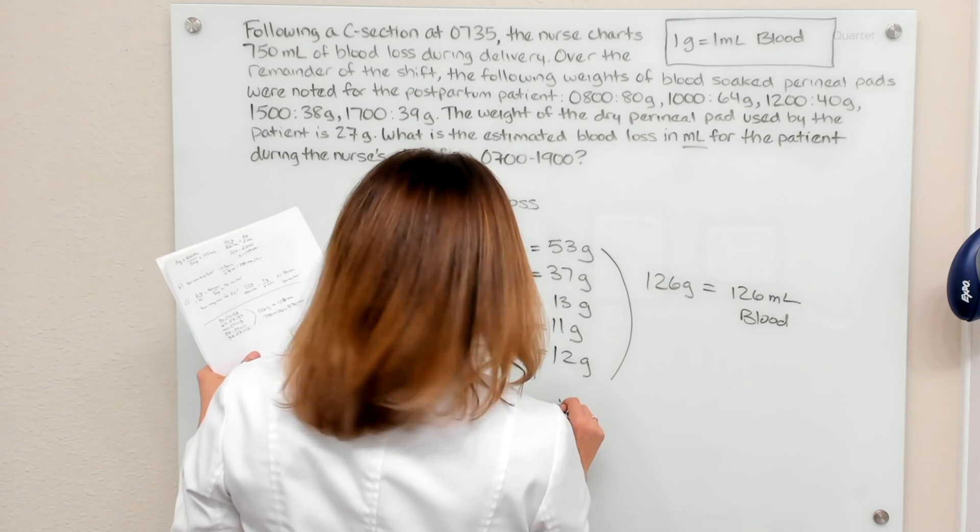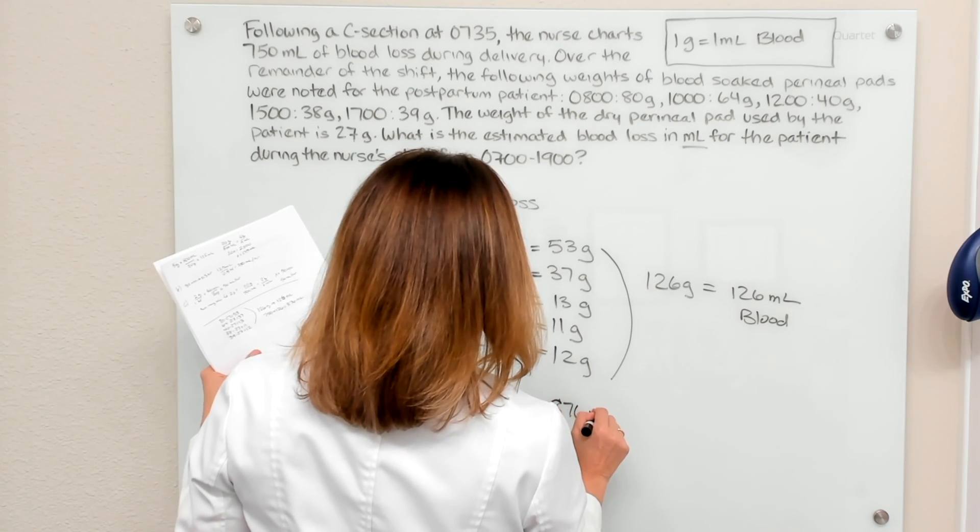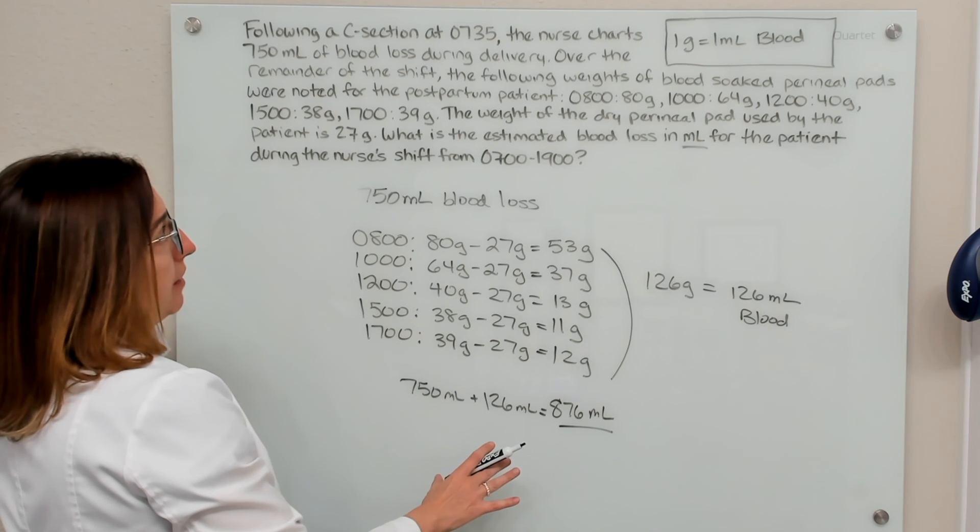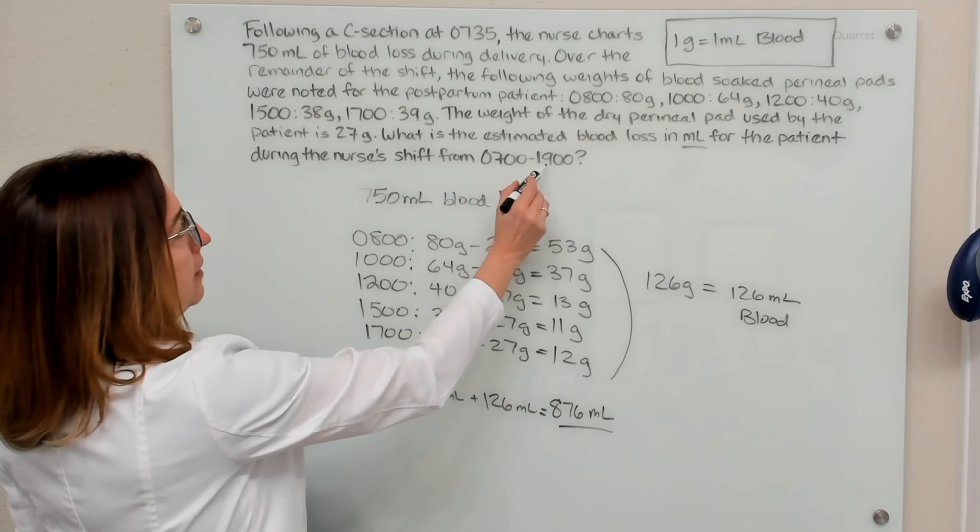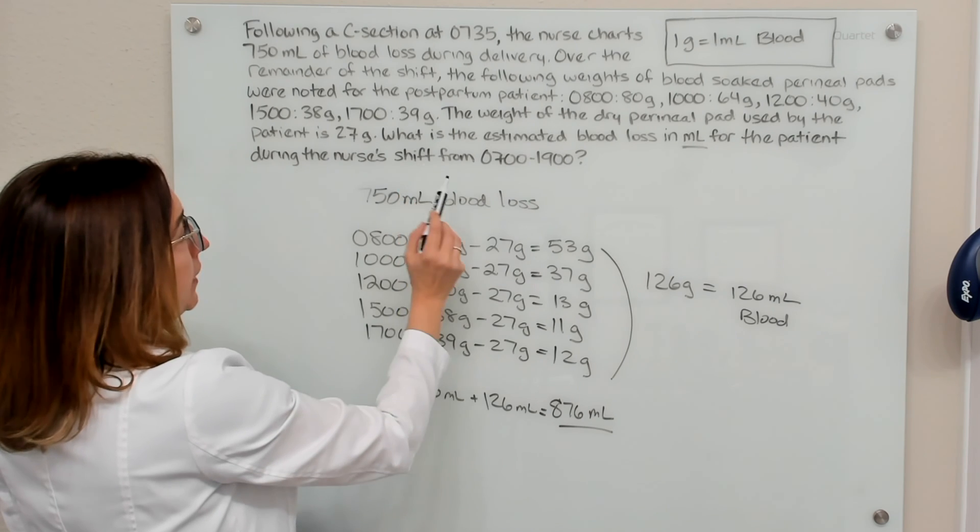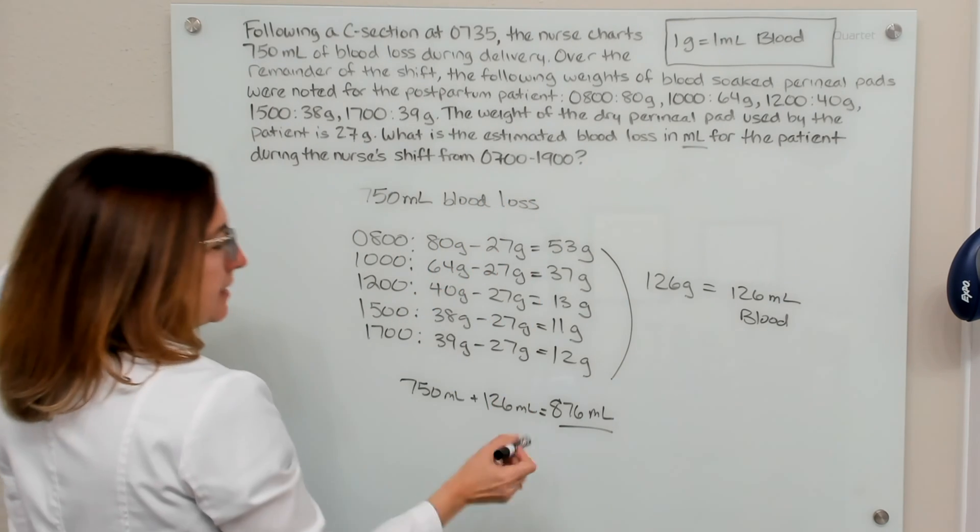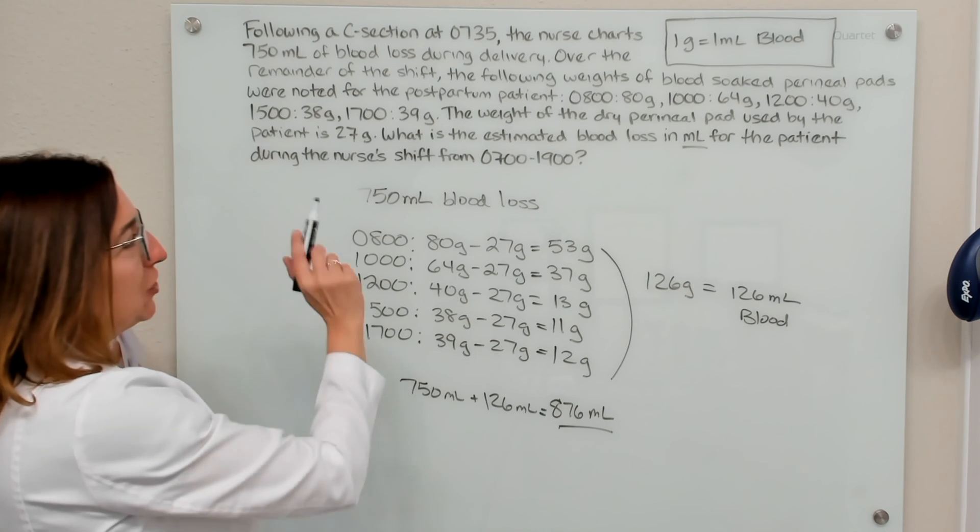And I end up with 876 mLs of estimated blood loss for the shift, because all of these times are between the nurse's shift from 0700 to 1900. So that would be the answer to this problem.